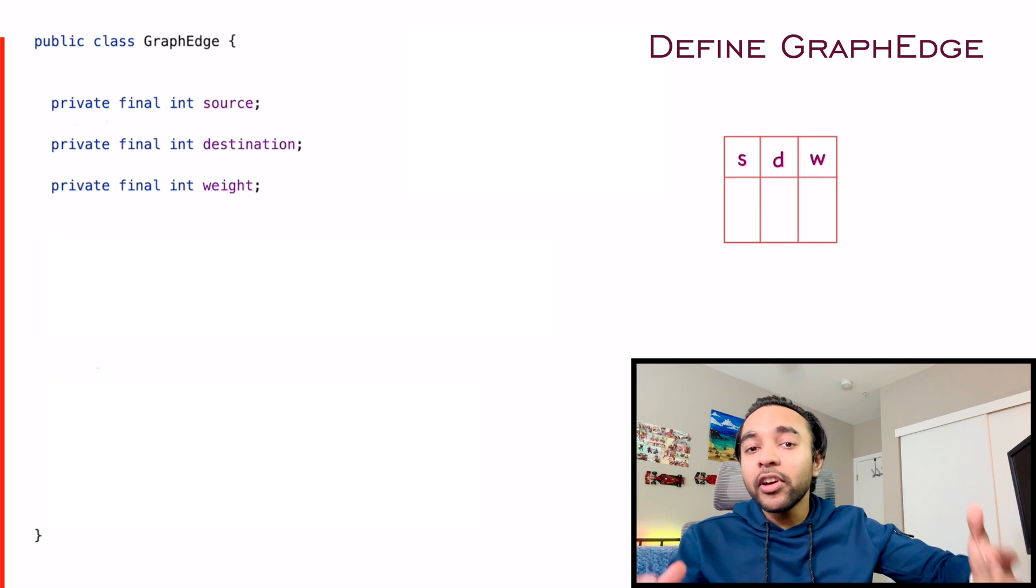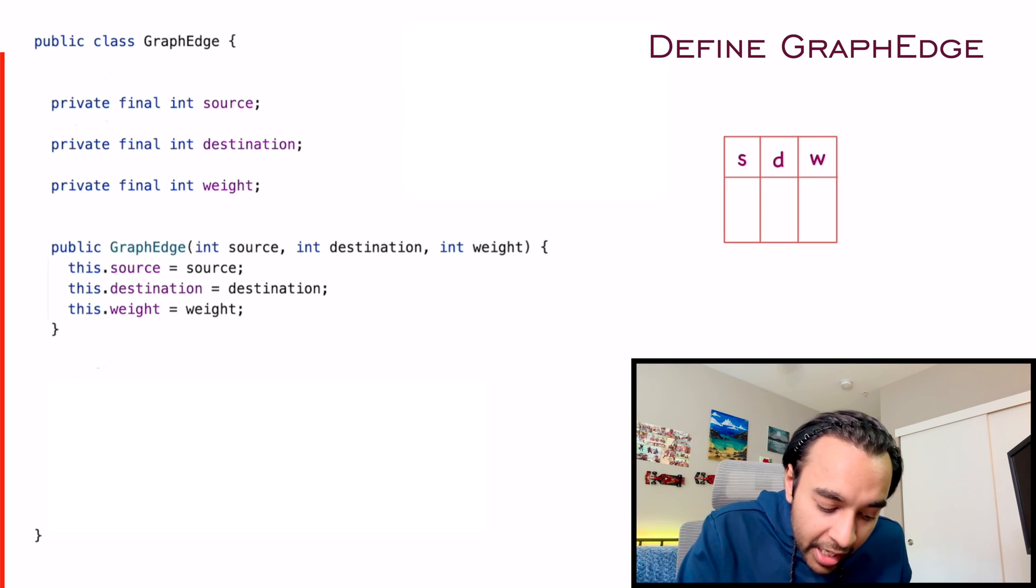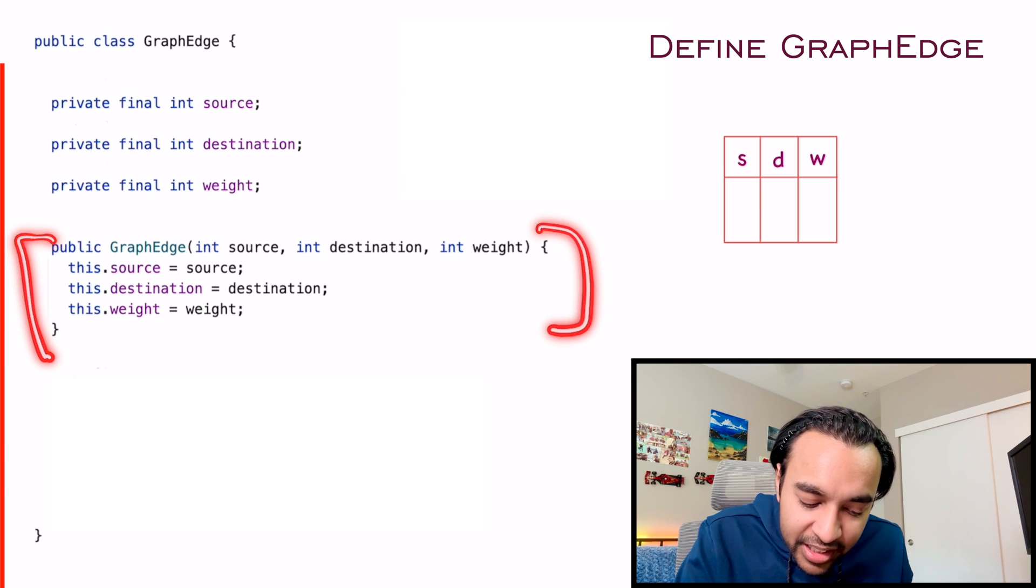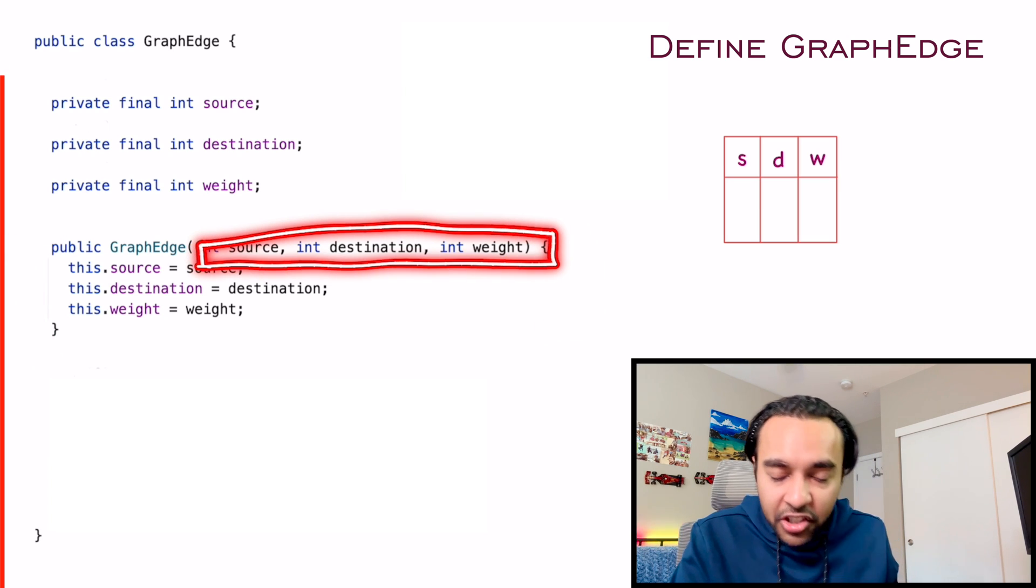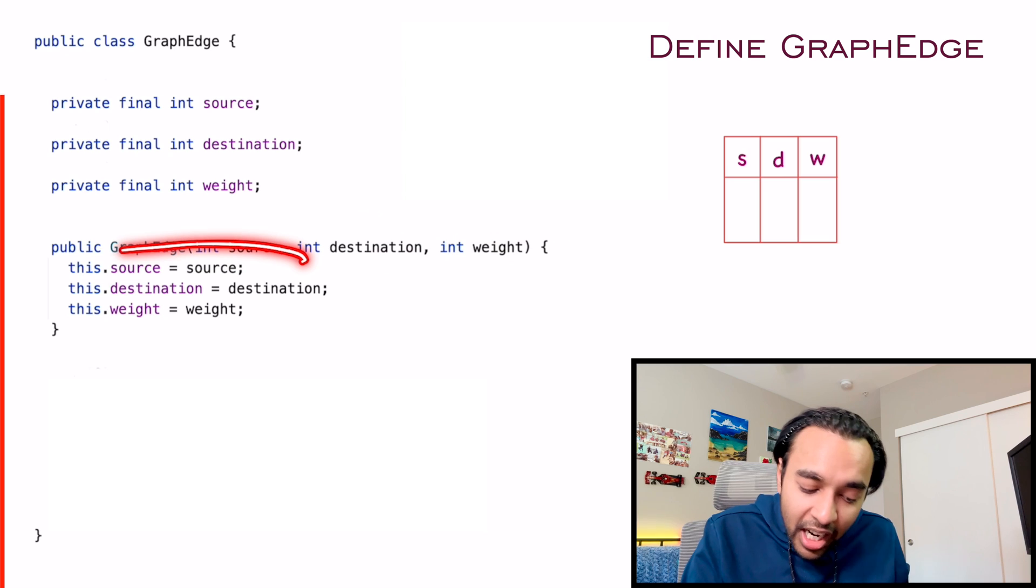So now, when you want to initialize this object, what do you do? In your constructor, we will pass in three values, a source, a destination, and a weight. And then we initialize our edge.